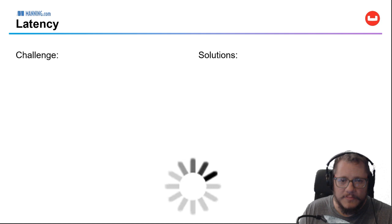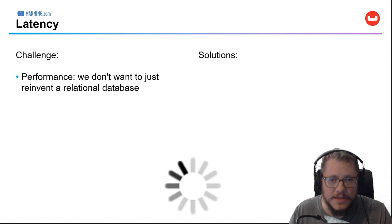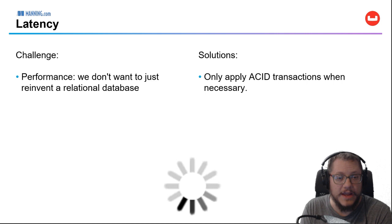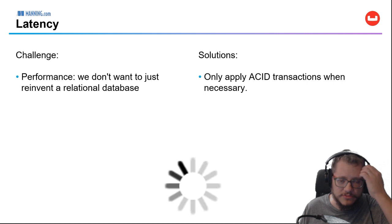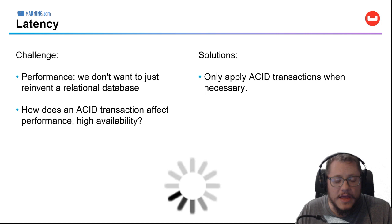Latency is another issue — performance, basically. We don't want to reinvent a relational database with the same performance constraints, because we'd just be reinventing something that already exists. The challenge here is really educational: distributed ACID transactions are always going to have overhead, potentially a lot. Hopefully it's getting improved and reduced with every new version, but the overhead is always going to be there. So only apply a transaction when it's necessary.